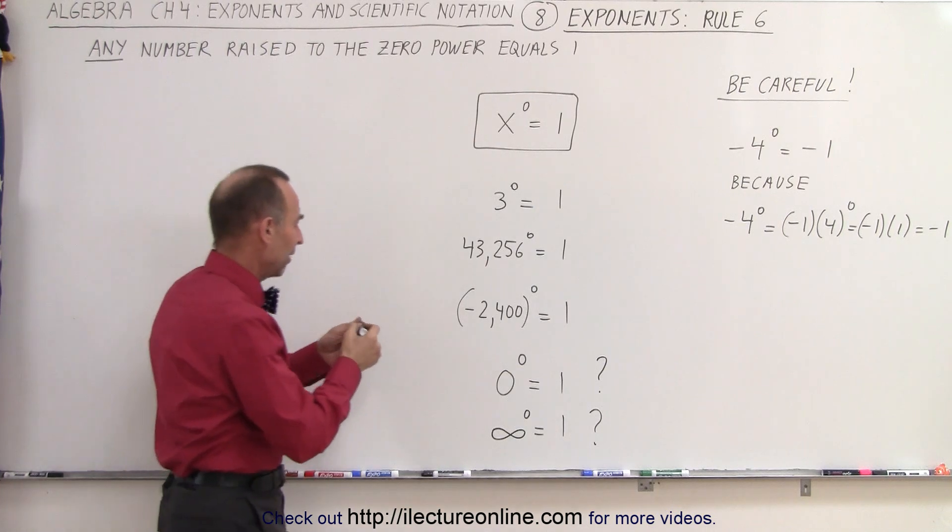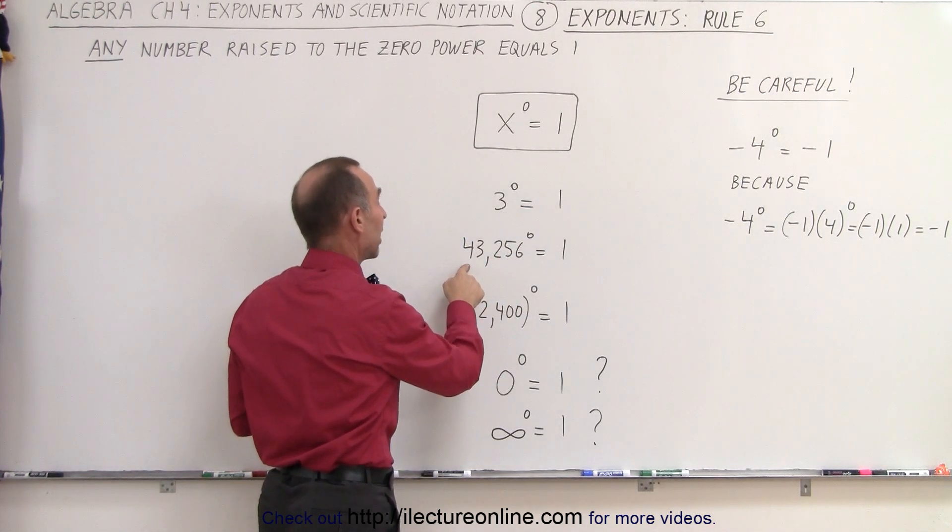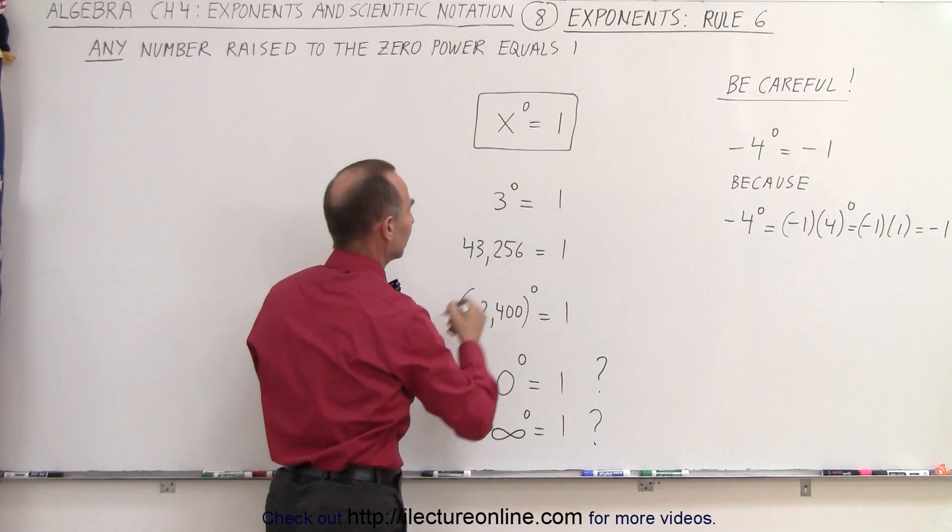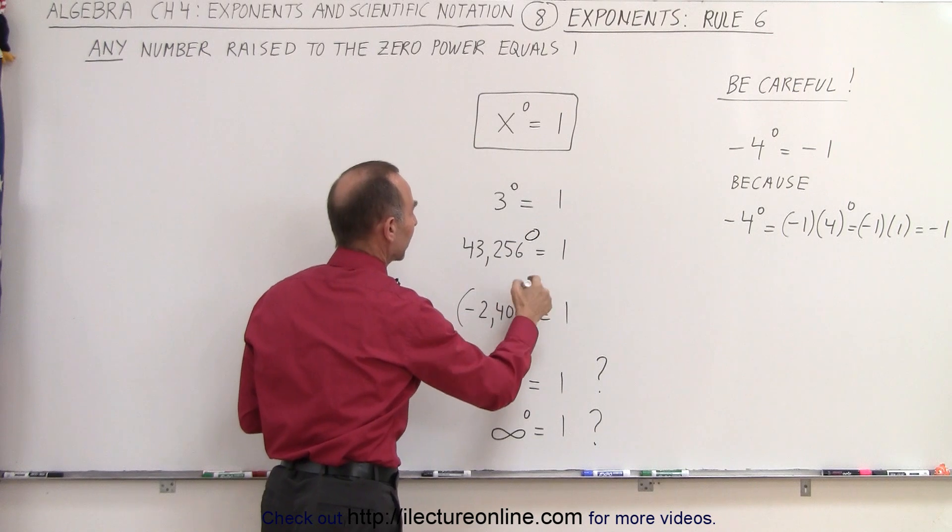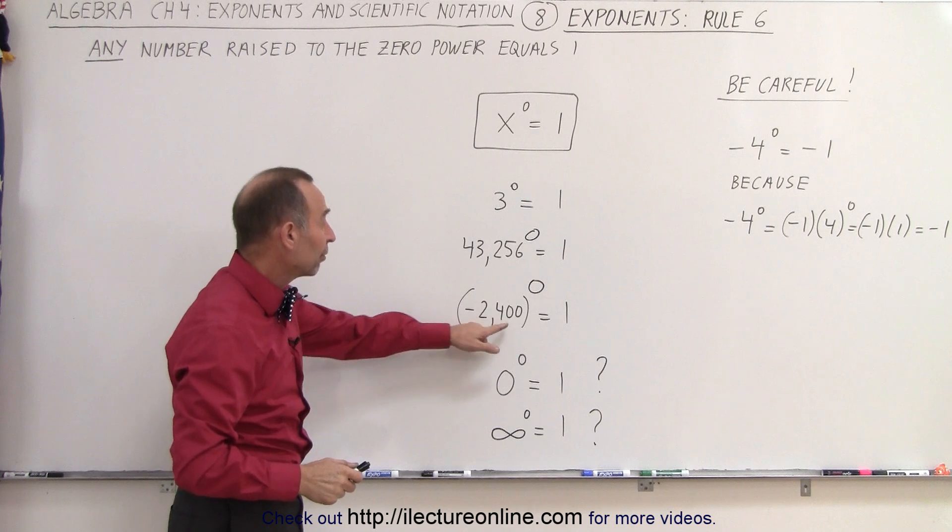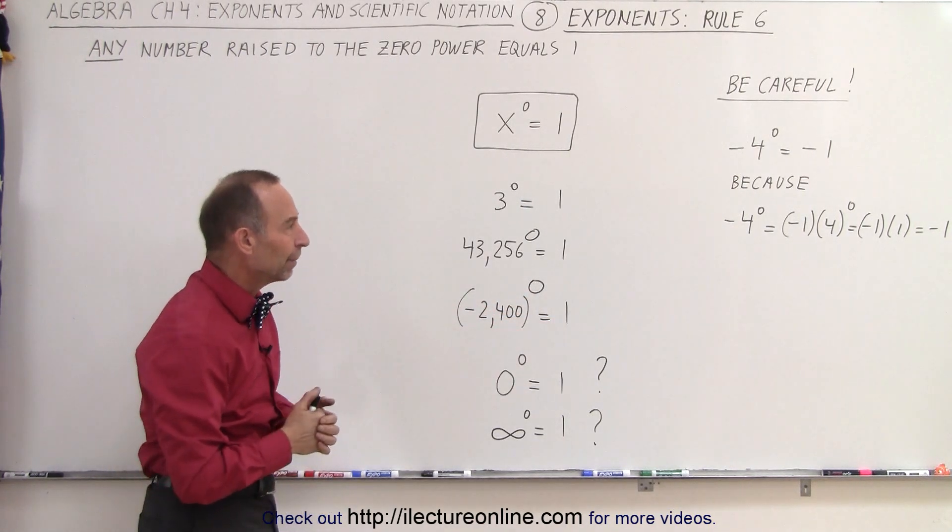So that means that if we have 3 to the 0 power, does that equal 1? The answer is yes. How about 43,256 raised to the 0 power? I should make this number a little bit bigger. Is that equal to 1? The answer is yes. How about negative 2,400 raised to the 0 power? Is that 1? Yes, it's equal to 1 as well.